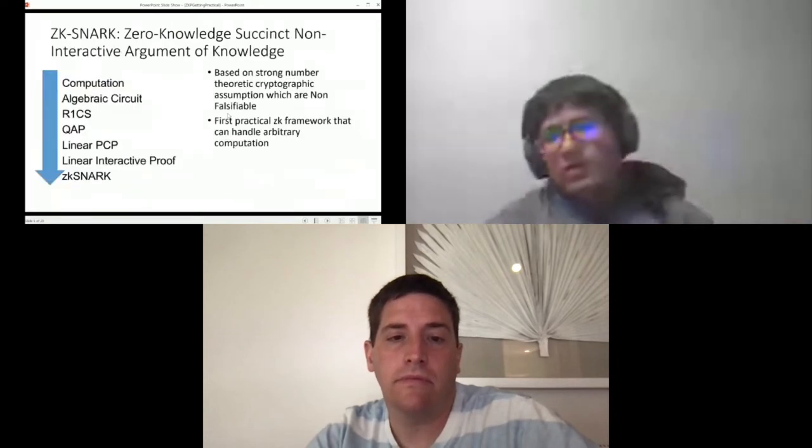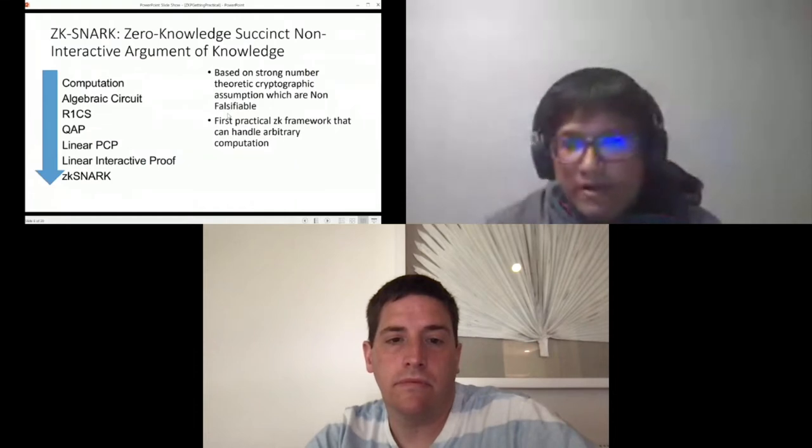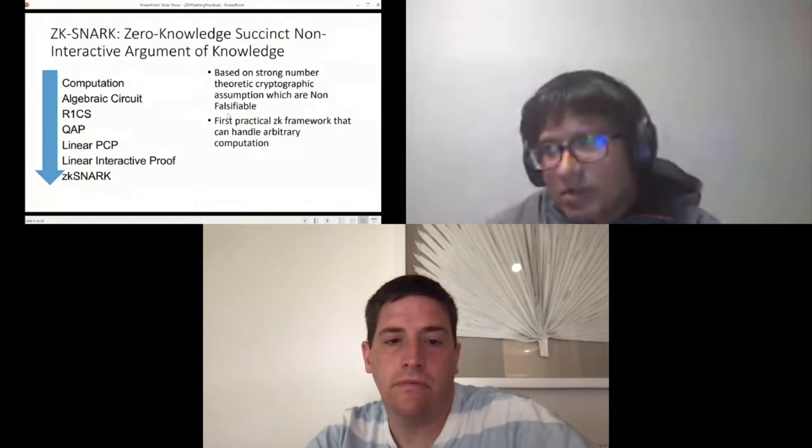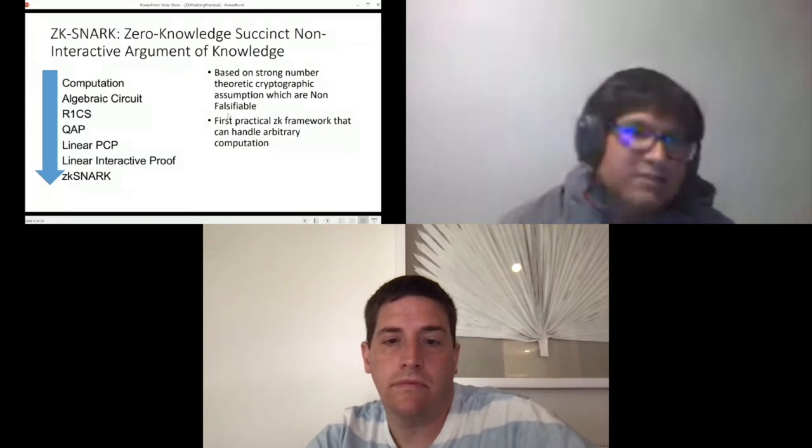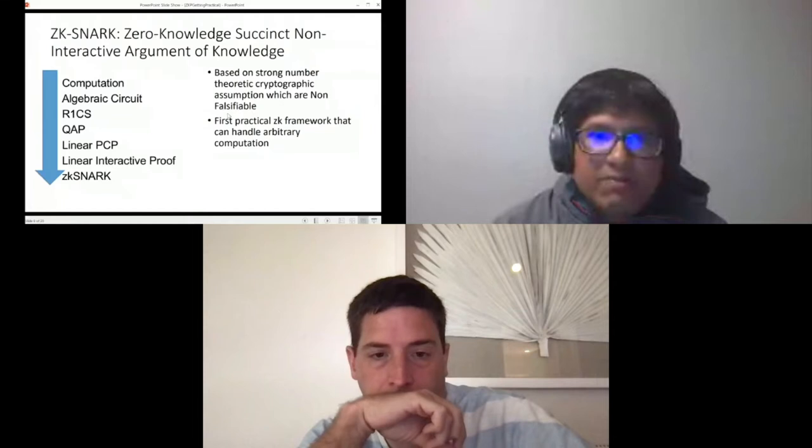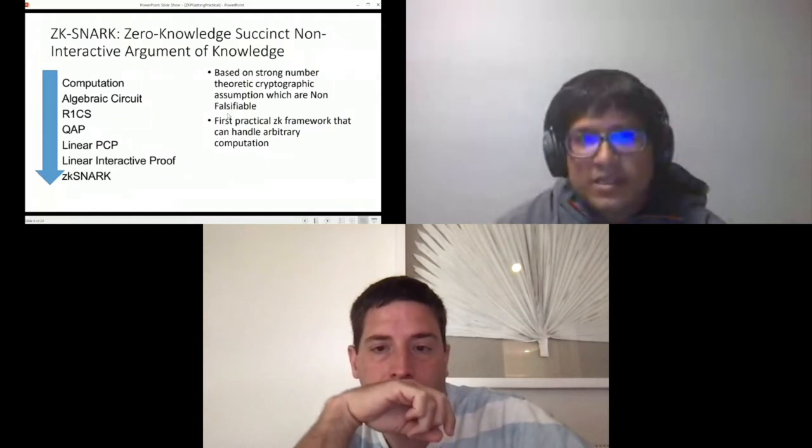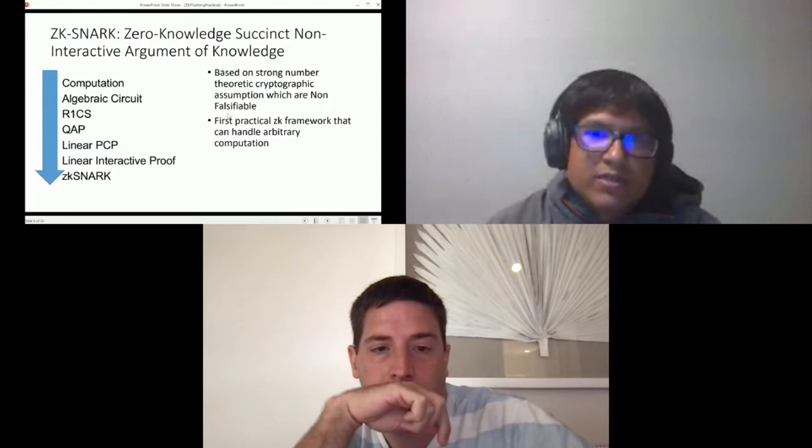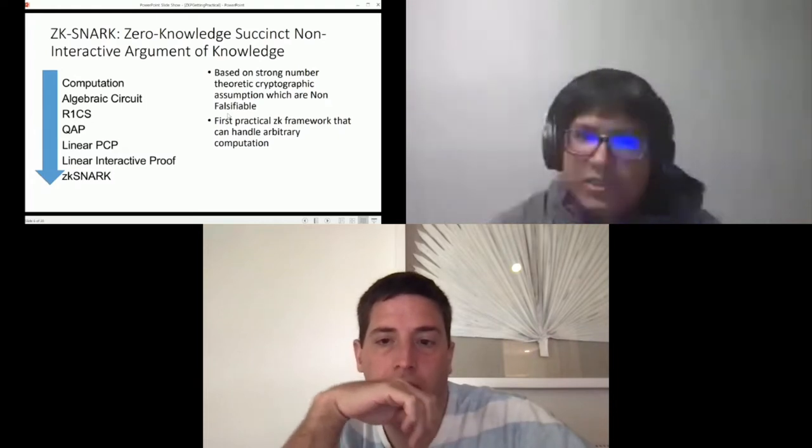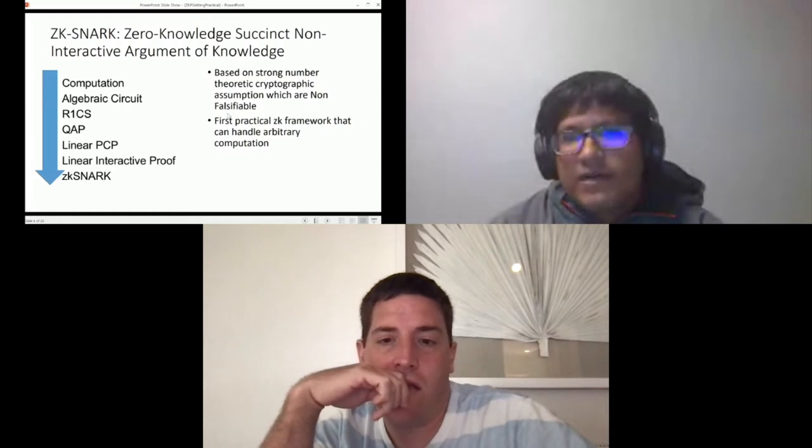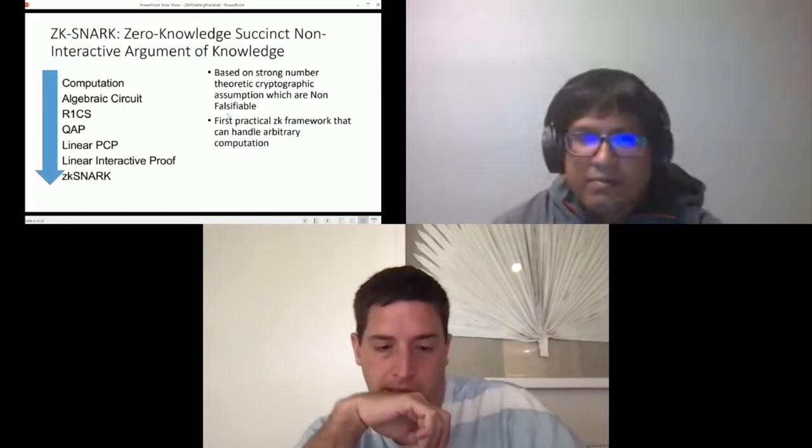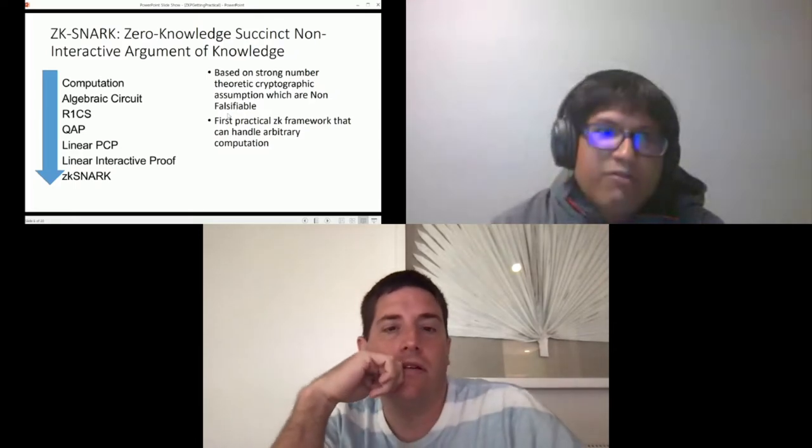The zero-knowledge protocols for all NP relations were invented a long time back in early 90s. However, they became practical recently with the advent of zk-SNARKs. The zk-SNARKs are zero-knowledge Succinct Non-interactive Arguments of Knowledge and they are based on strong number theory cryptographic assumptions which are non-falsifiable.